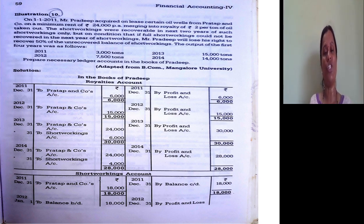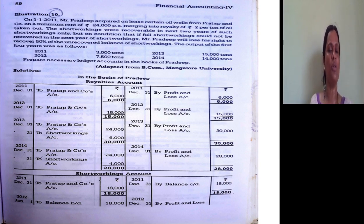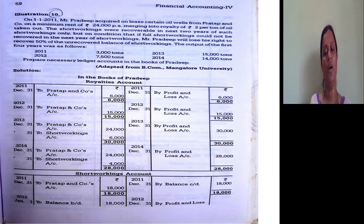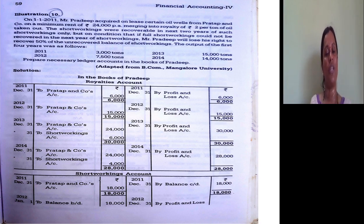I will explain this particularly when I start concentrating on the royalty chart. The output of the first 4 years was as follows: 2011 — 3,010 tons; 2012 — 7,500 tons; 2013 — 15,010 tons; and 2014 — 14,010 tons.